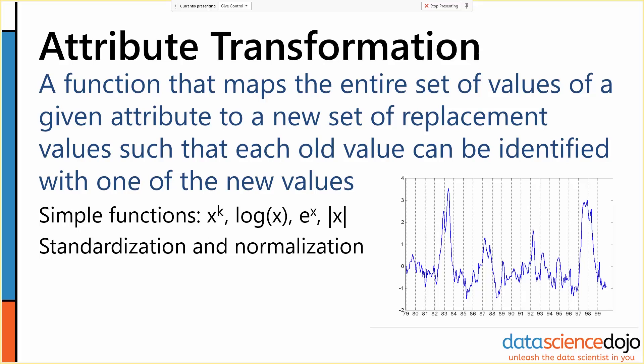All of these types of transformations allow us to bring out different dependencies in our data and to correlate our data attributes better with whatever our target is.